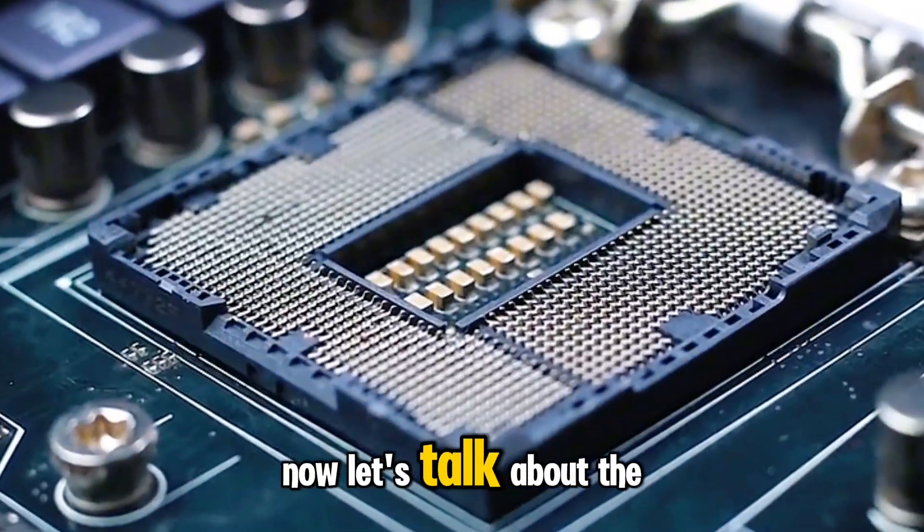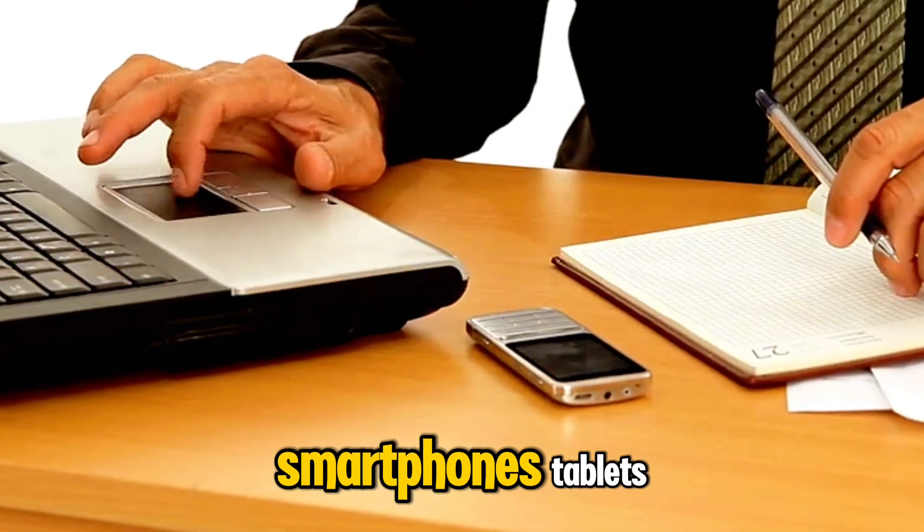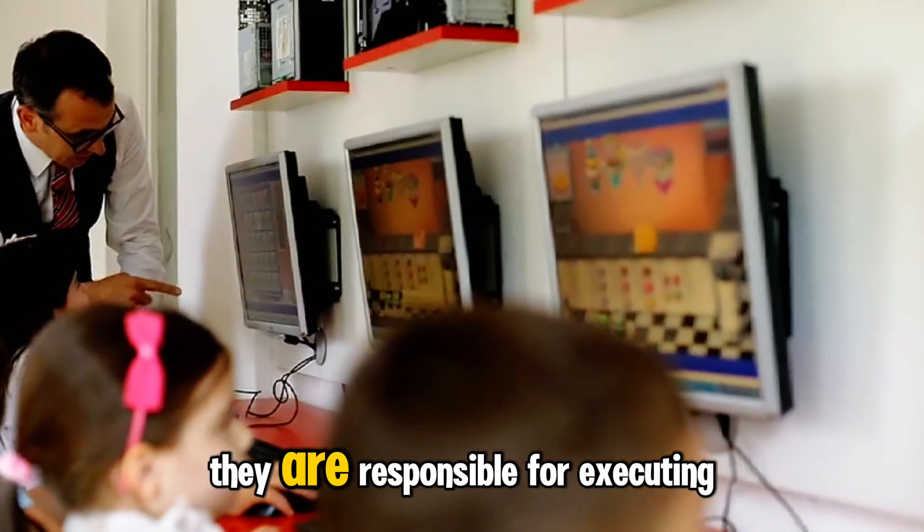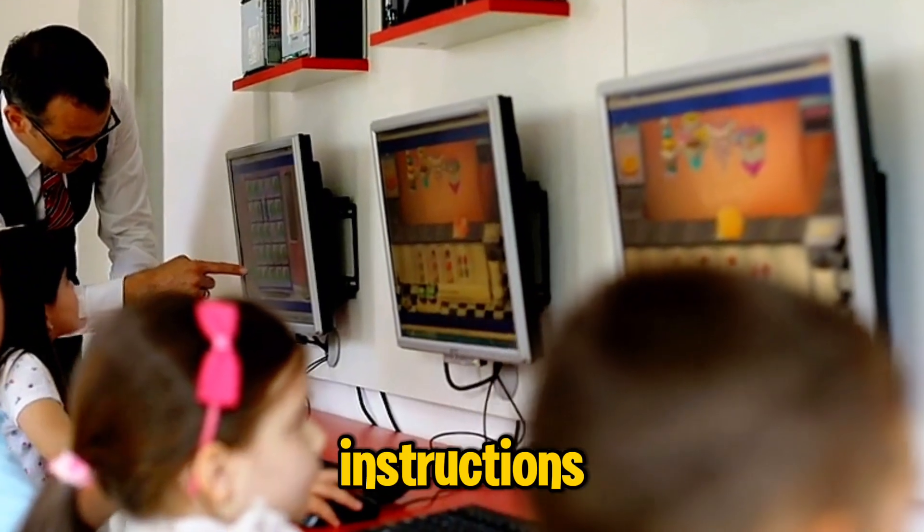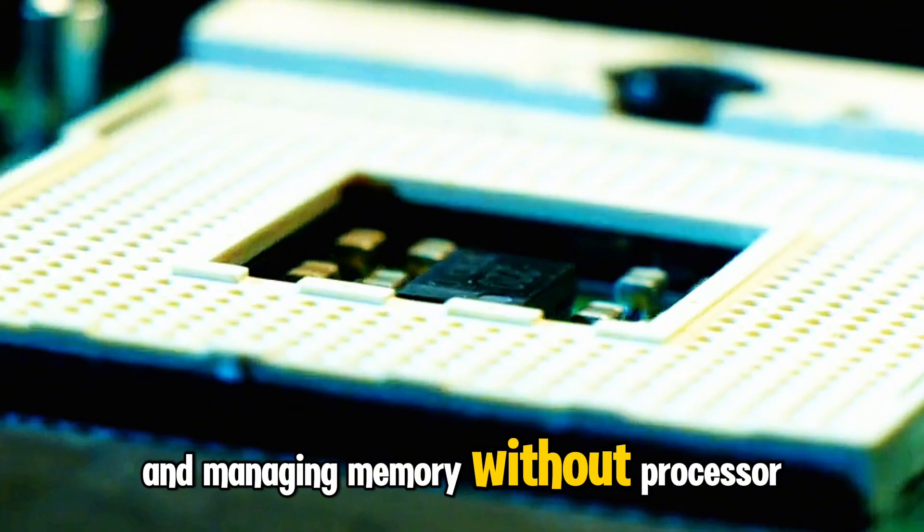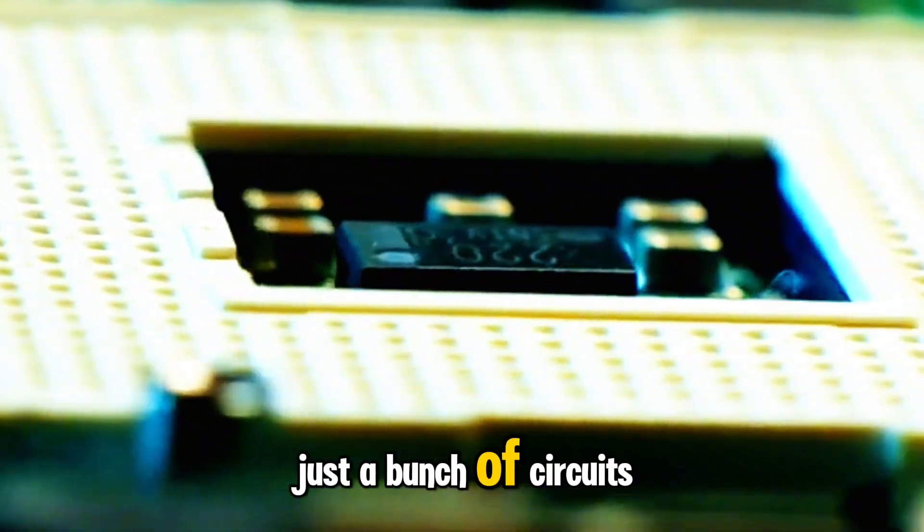Now, let's talk about the uses of processor chips. They are essential for computers, smartphones, tablets, and other electronic devices. They are responsible for executing instructions, controlling input and output, and managing memory. Without processor chips, our electronic devices would be just a bunch of circuits.